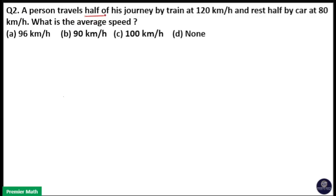A person travels half of his journey by train at the speed of 120 km per hour and rest half by car at 80 km per hour. What is the average speed?